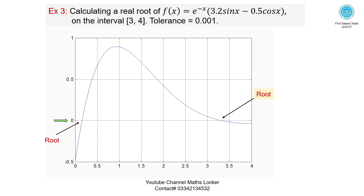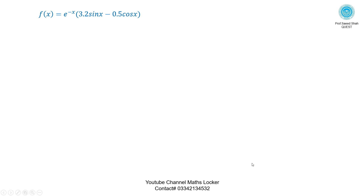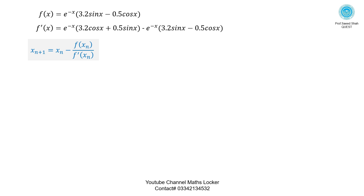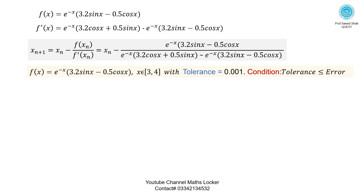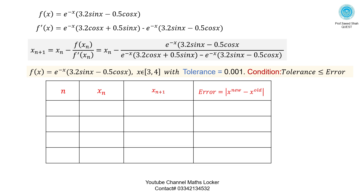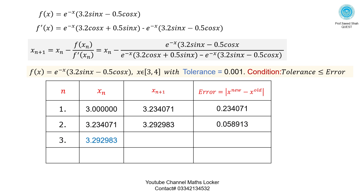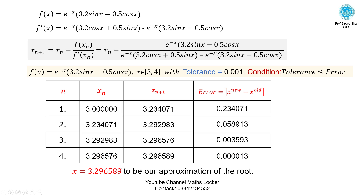Exercise 3: A graph of the function is shown. The root lies in the interval [3, 4]. Take the given function, compute its derivative, simplify, substitute the values into the table, and apply the Newton-Raphson iterations. The root is approximately 3.296589. This exercise is left for the student to do themselves.